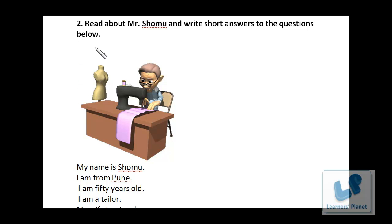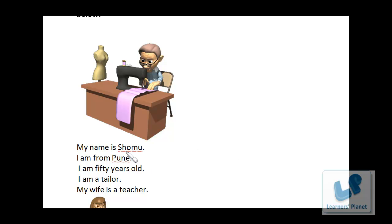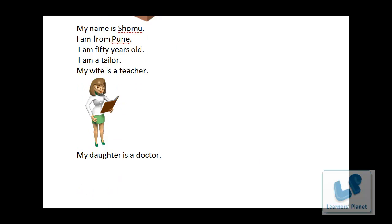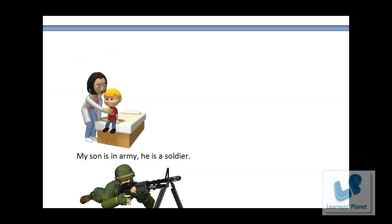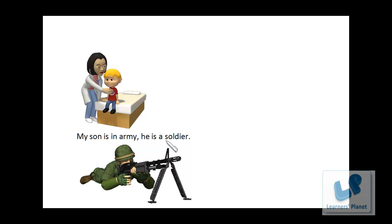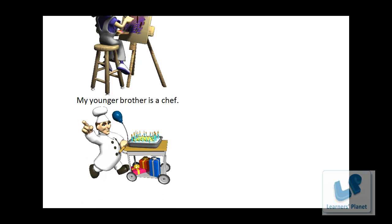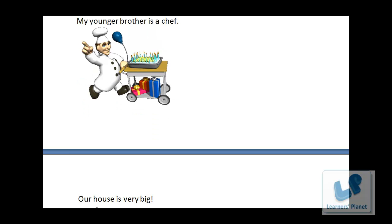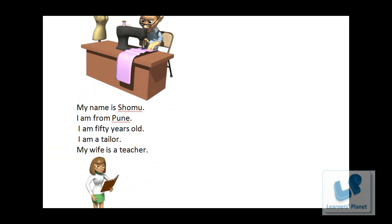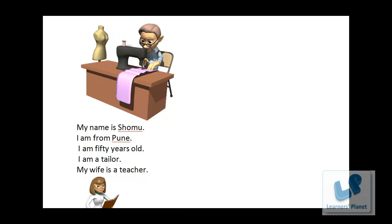Exercise 2: Read about Mr. Shomu and write short answers to the questions below. Here is his description: My name is Shomu. I am from Pune. I am 50 years old. I am a tailor. My wife is a teacher. My daughter is a doctor. My son is in the army — he is a soldier. My sister is a painter. My younger brother is a chef. Our house is very big. After reading all these details about Mr. Shomu and his family and lifestyle, we are supposed to answer the questions that follow.